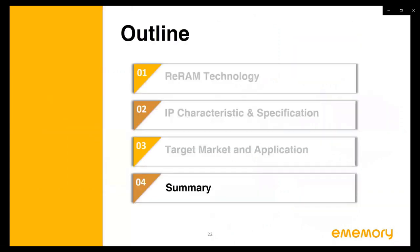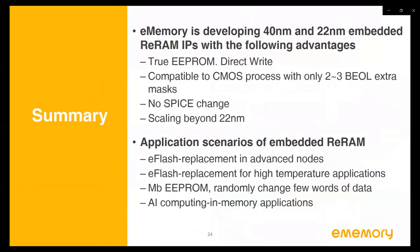To summarize today's webinar, eMemory is developing 40 and 22 nanometer embedded RRAM IPs with several advantages. The advantages include e-flash replacement in advanced nodes or high-voltage BCD processes, and the RRAM switching mechanism makes it suitable for AI computing-in-memory applications.